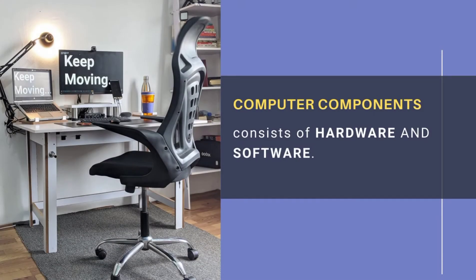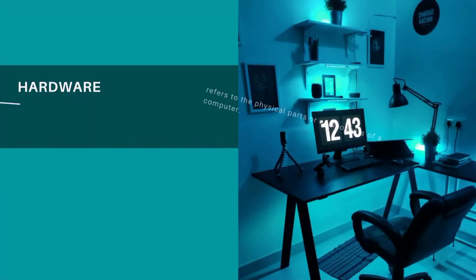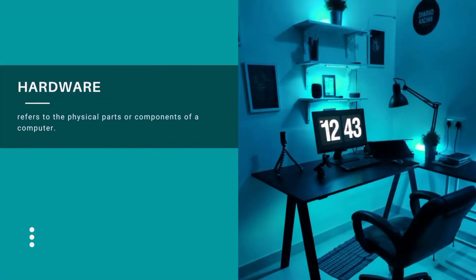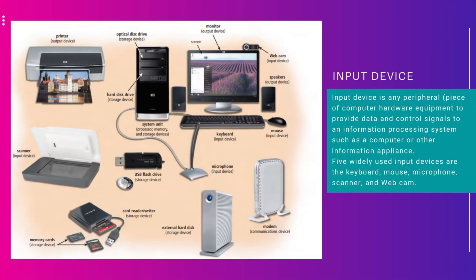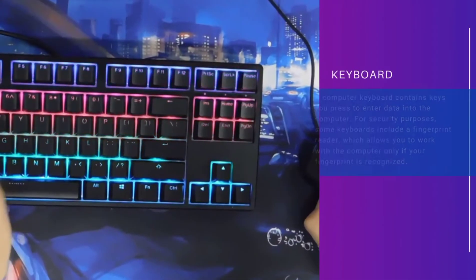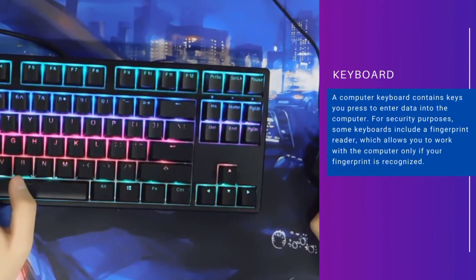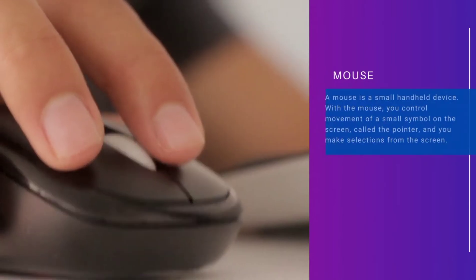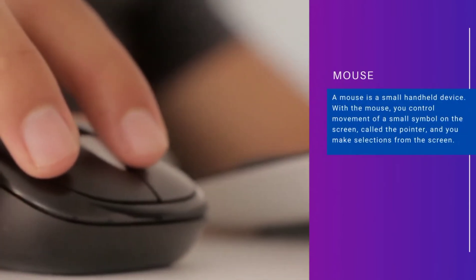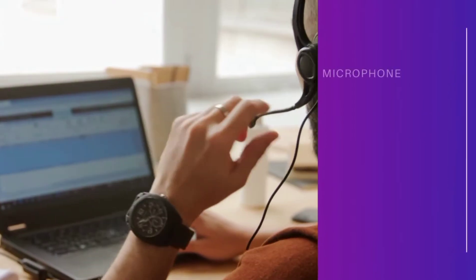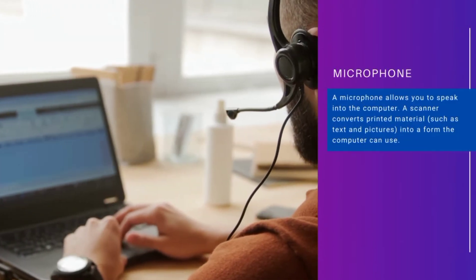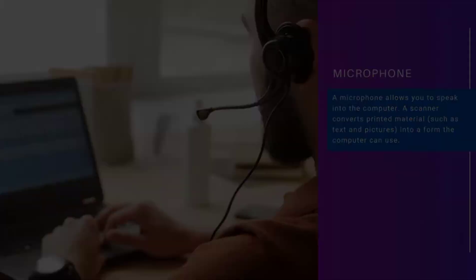Computer components consist of hardware and software. Hardware refers to the physical parts or components of a computer, and consists of input and output devices. An input device is a peripheral or piece of computer hardware equipment used to provide data and control signals to an information processing system, such as a keyboard, a mouse, a microphone, and a webcam.